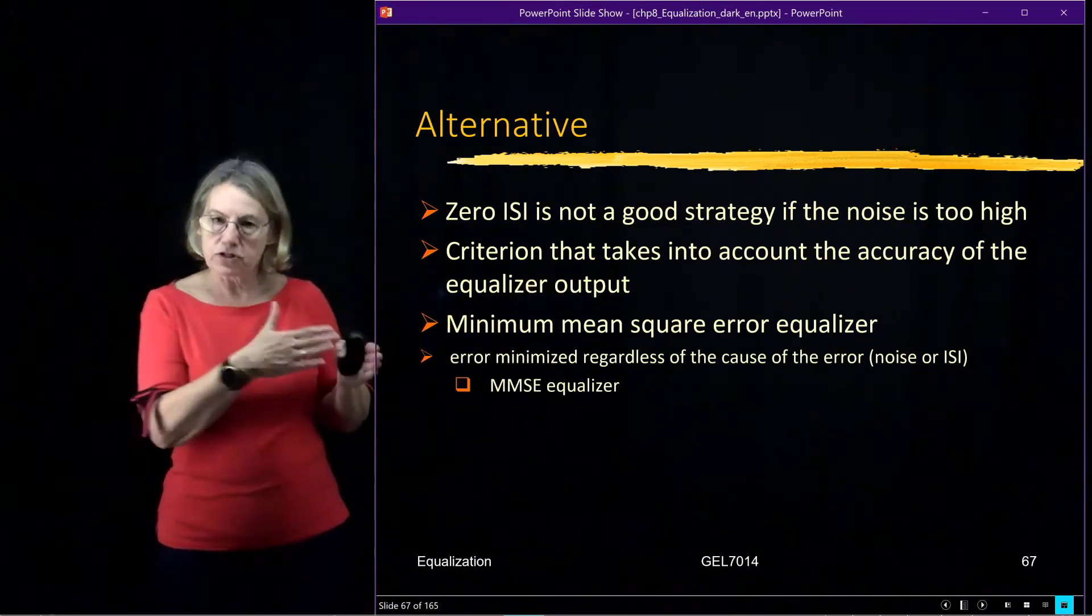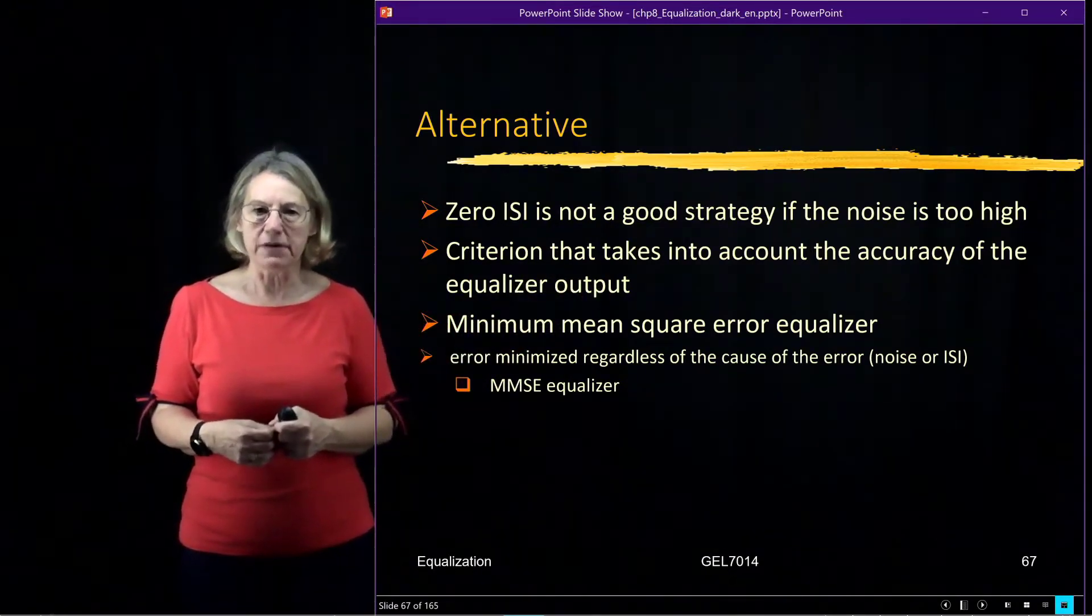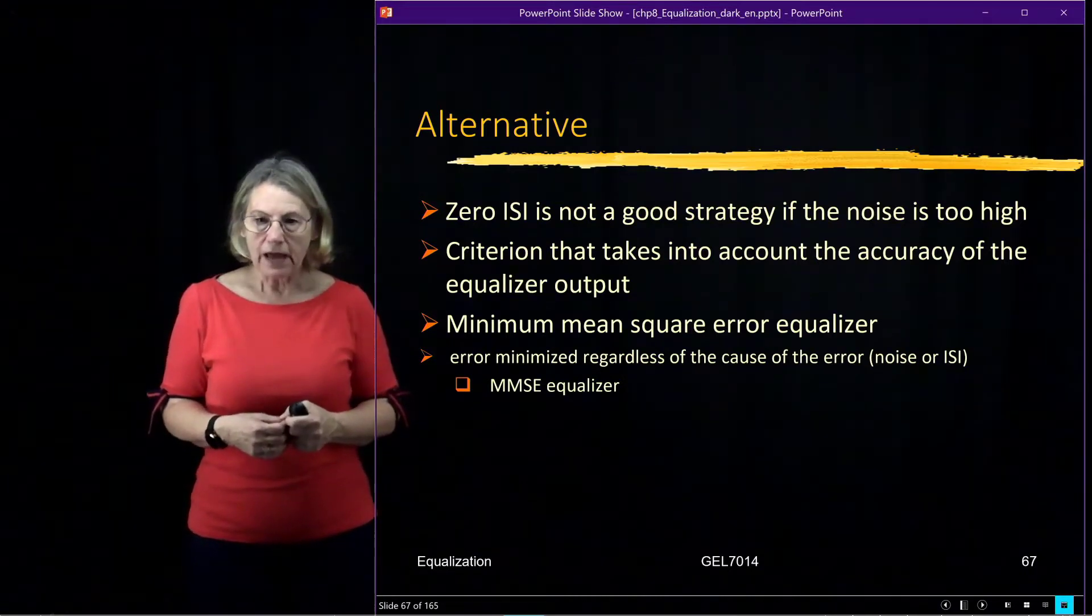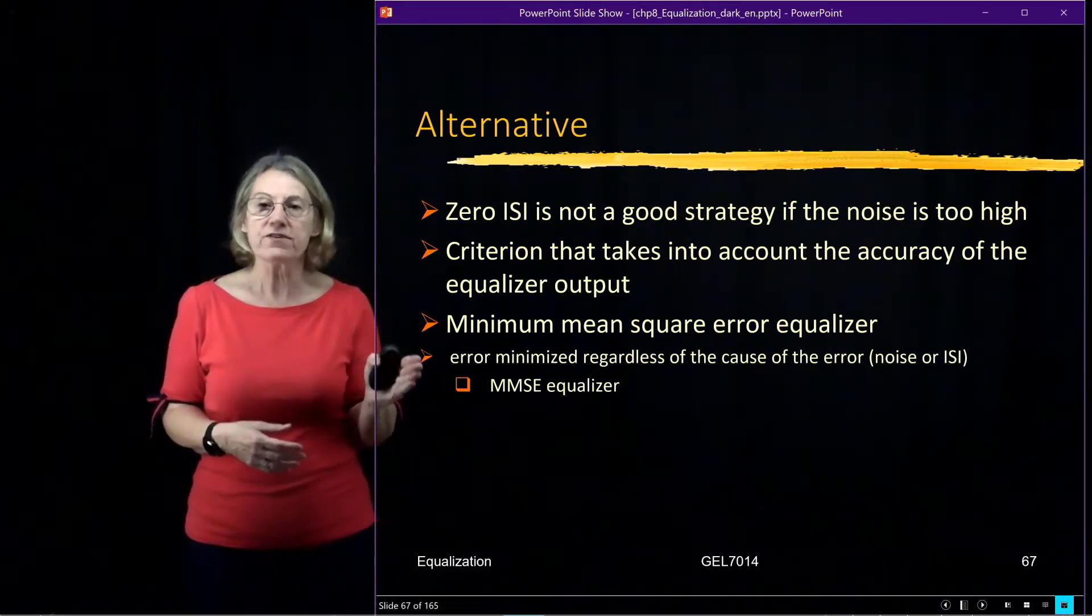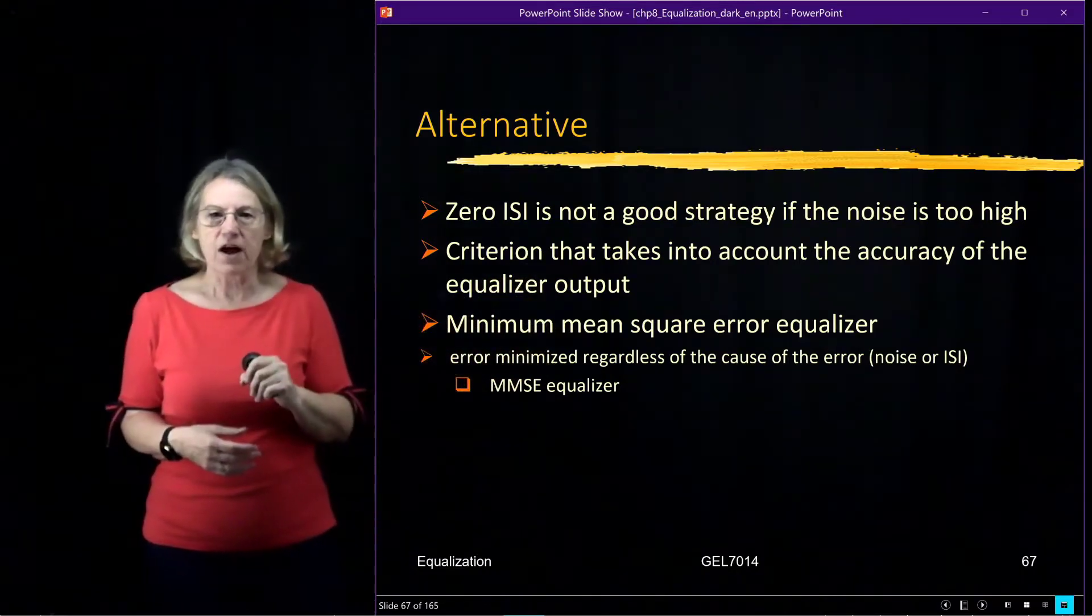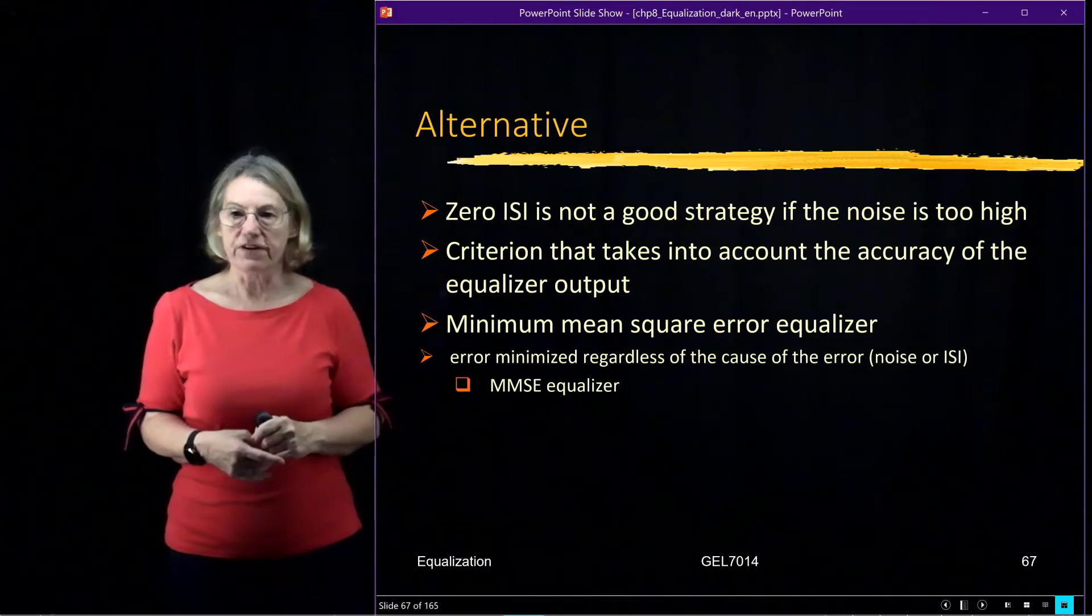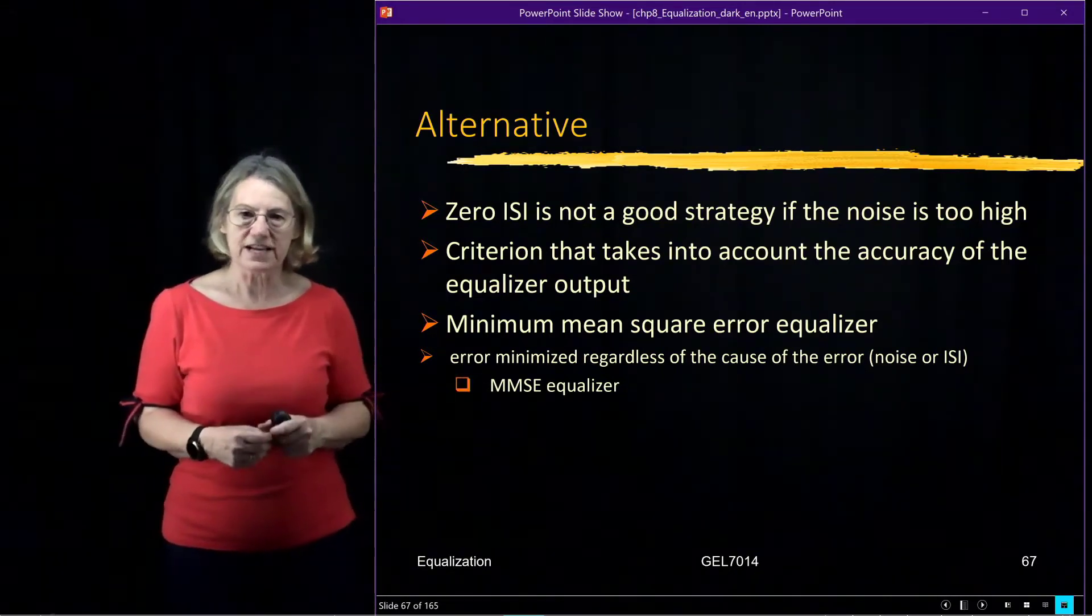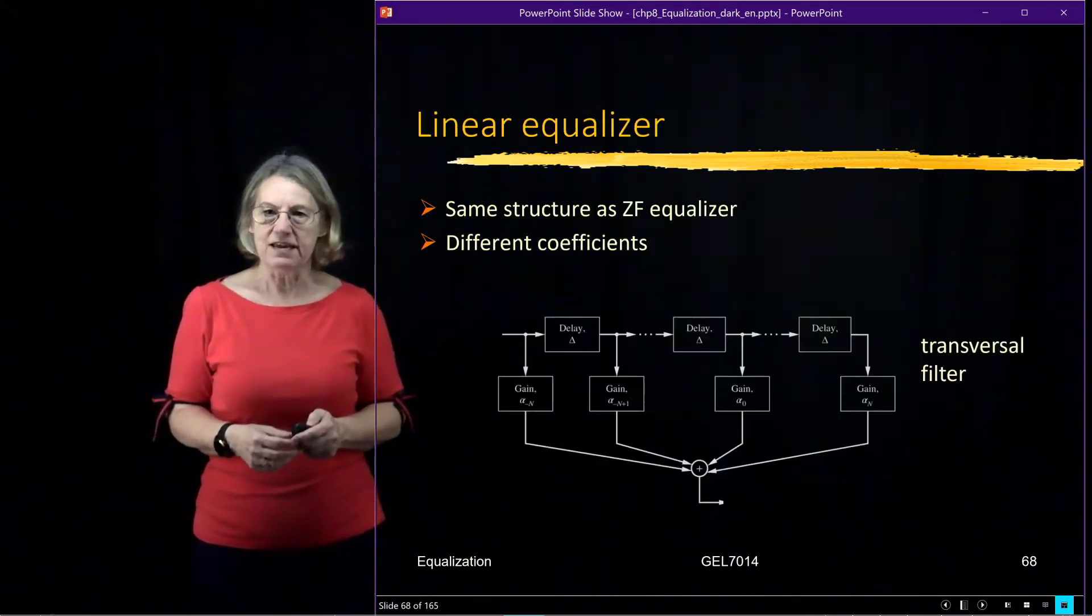And so the approach that we're going to discuss is minimizing the mean squared error, and this error is minimized whether the error comes from noise or whether it comes from intersymbol interference. And this is what we're going to be discussing today, the MMSE equalizer.